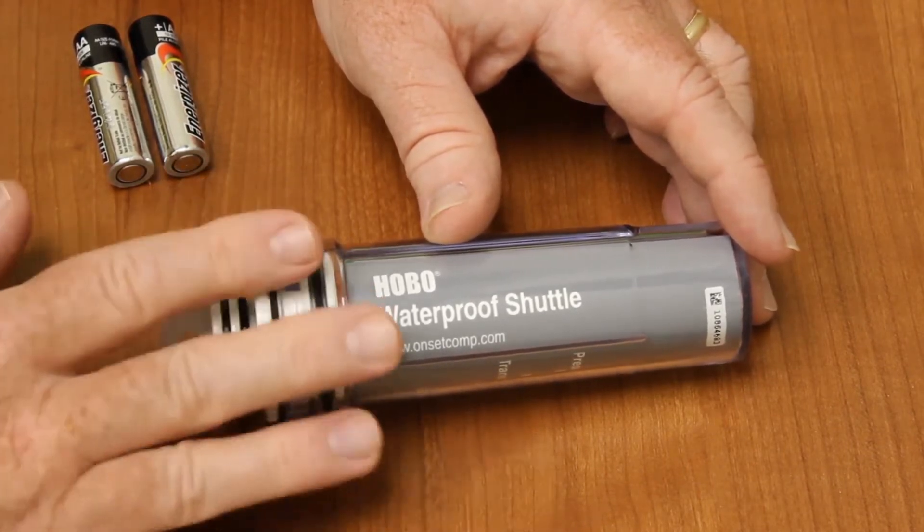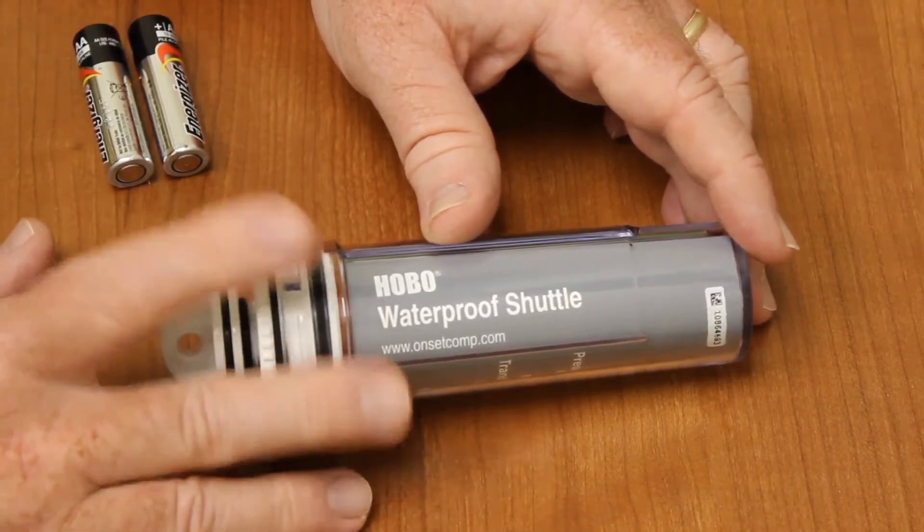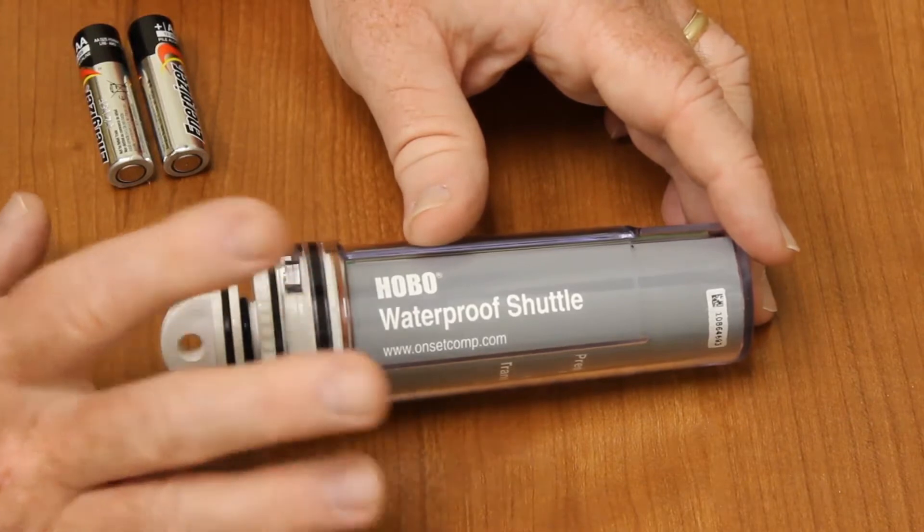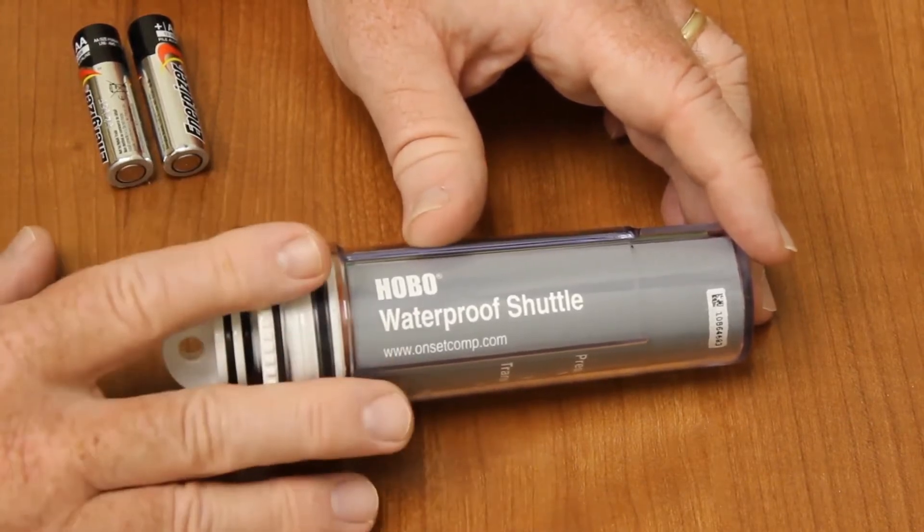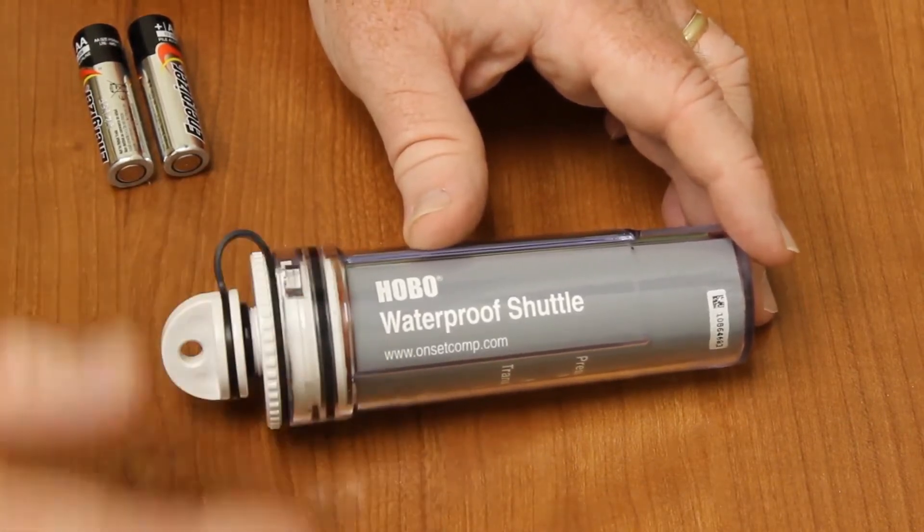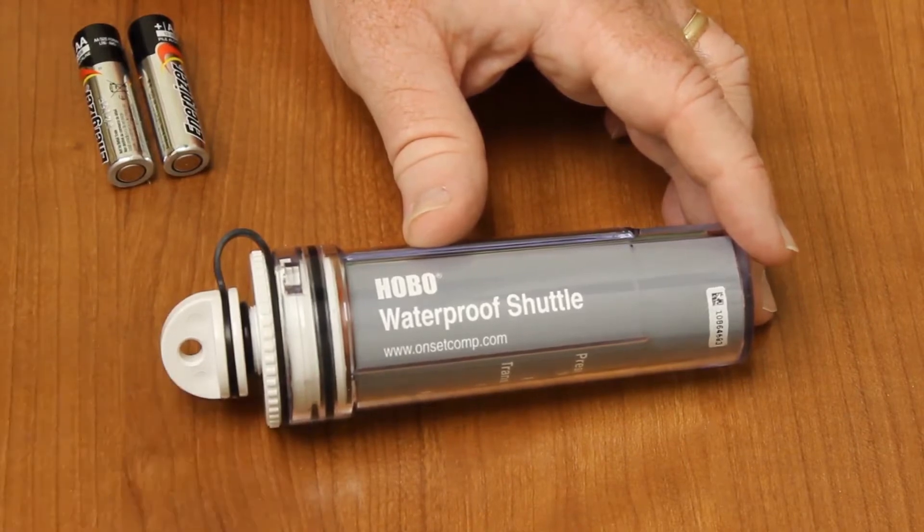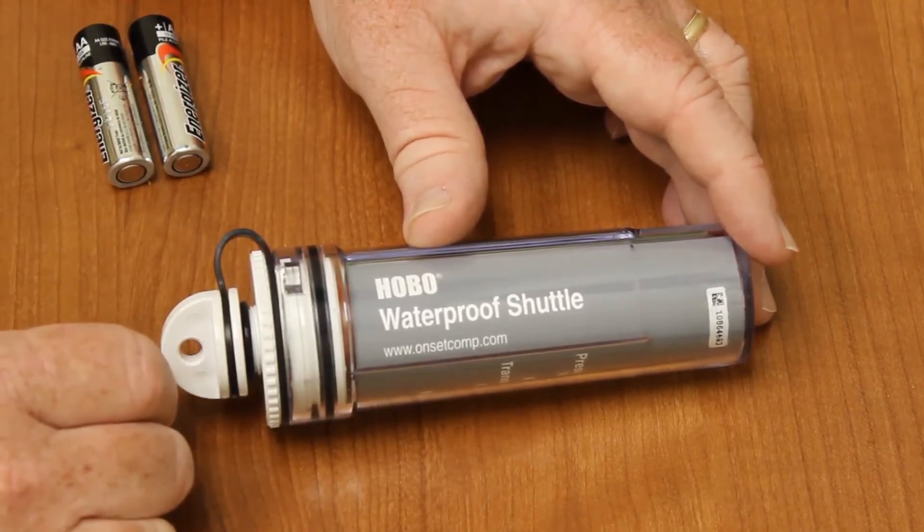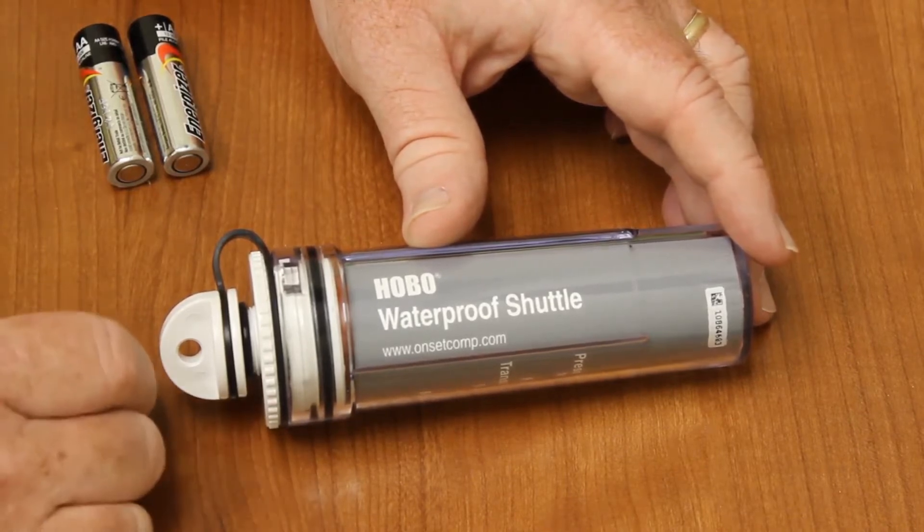The data is stored in the Shuttle in non-volatile memory, so you don't have to worry about losing data by replacing the batteries. If the Shuttle is still communicative, you probably want to offload the data before you change the batteries. Obviously, if the batteries are dead, you can do it afterwards. You're not going to lose any data.